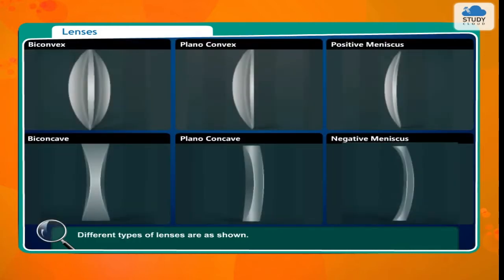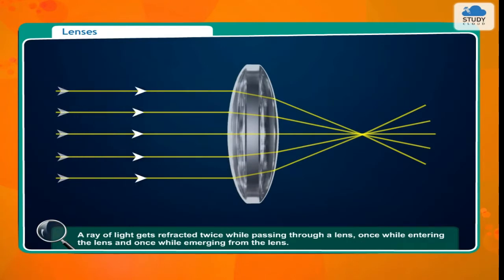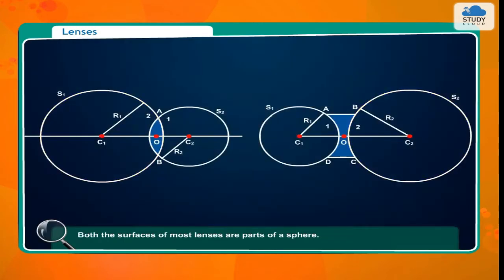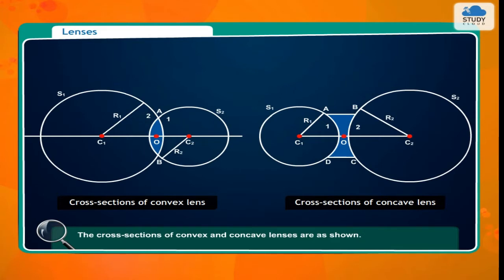Different types of lenses are as shown. A ray of light gets refracted twice while passing through a lens — once while entering the lens and once while emerging from the lens. The direction of the ray changes because of these refractions. Both the surfaces of most lenses are parts of a sphere. The cross sections of convex and concave lenses are as shown. The surface marked as 1 is part of sphere S1, while surface 2 is part of sphere S2.